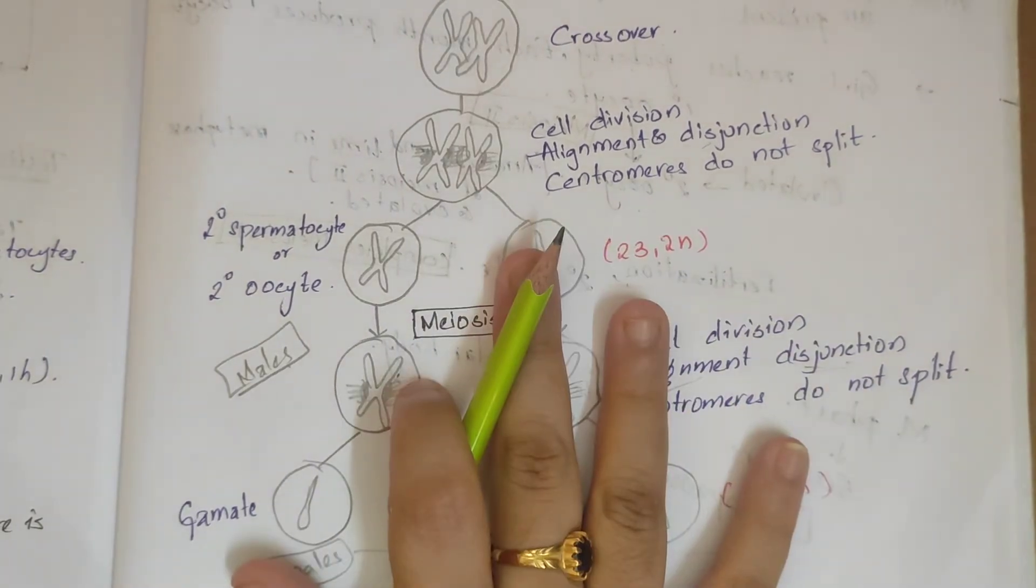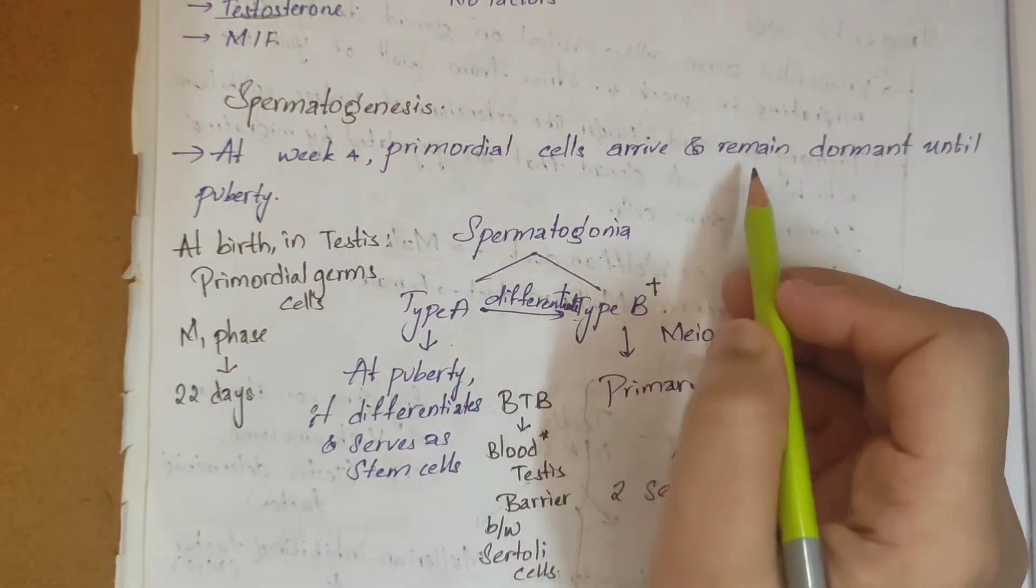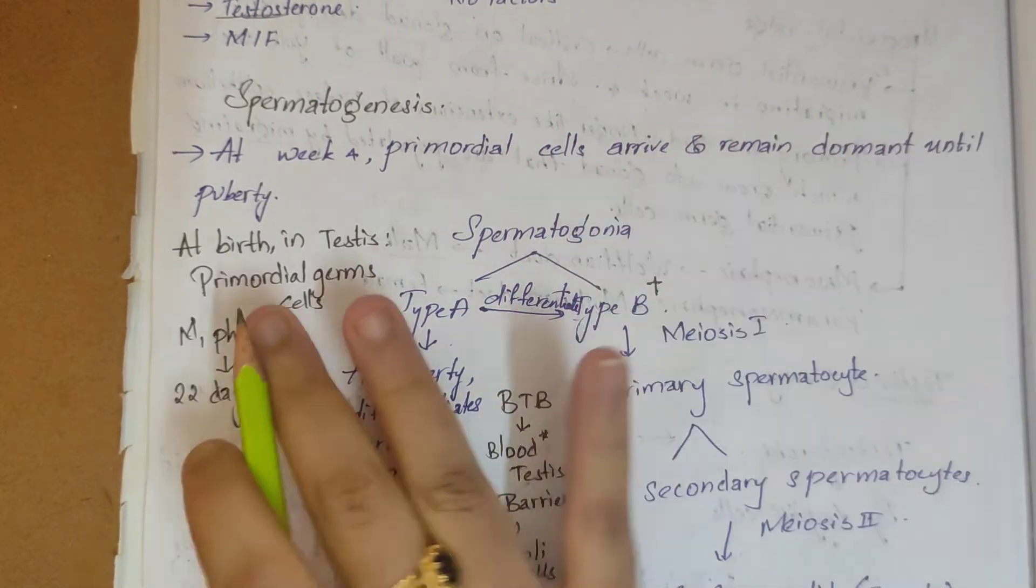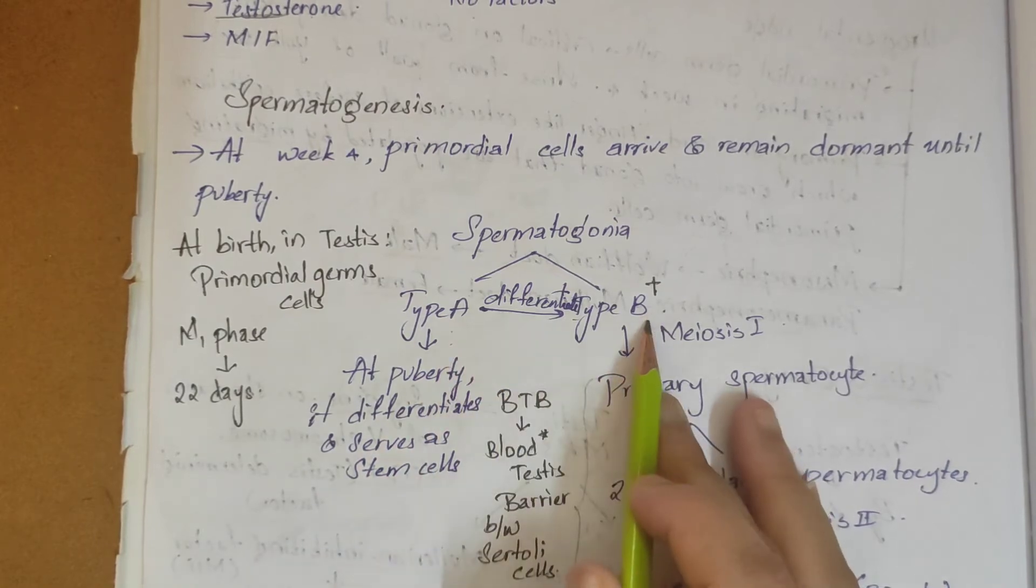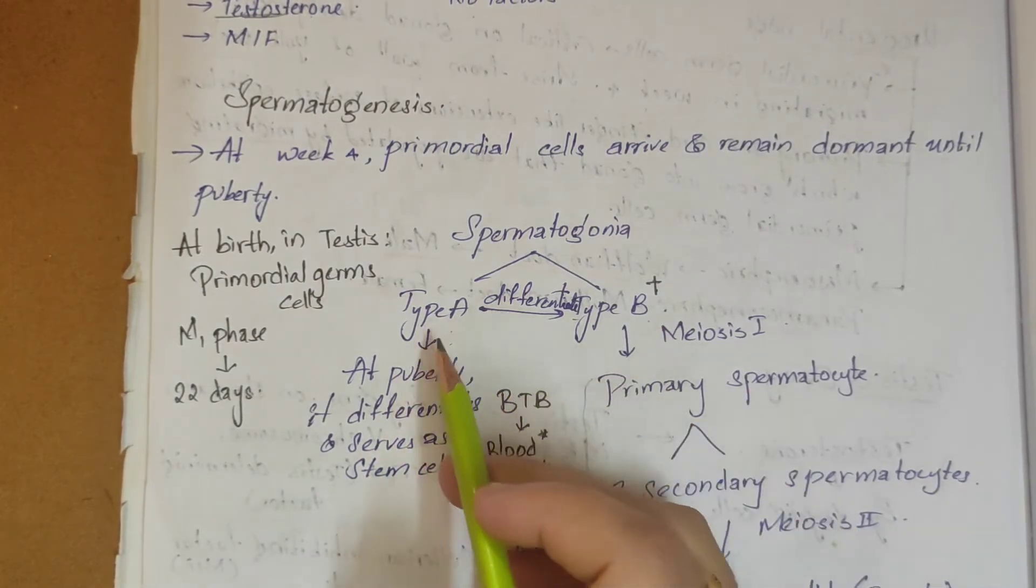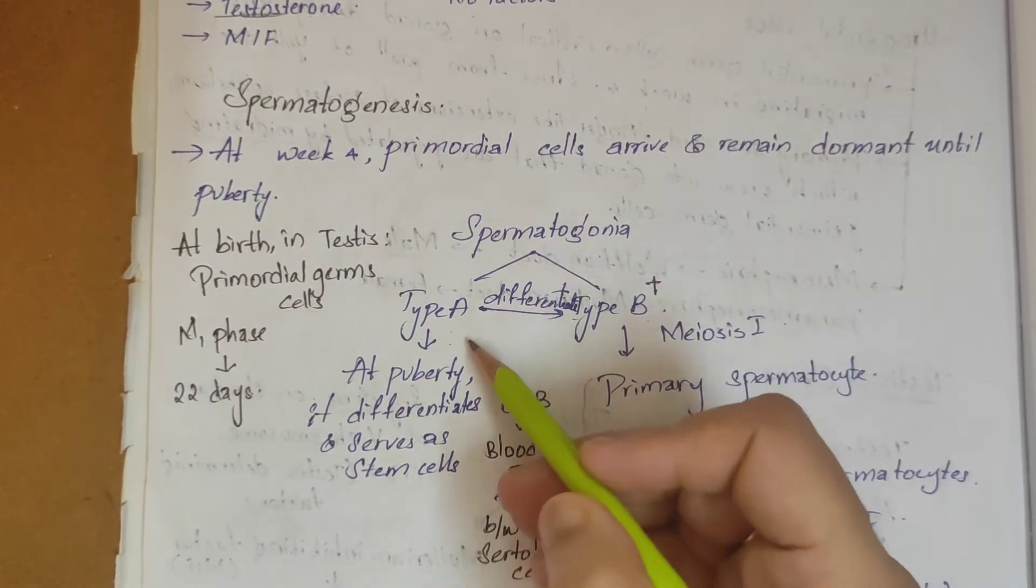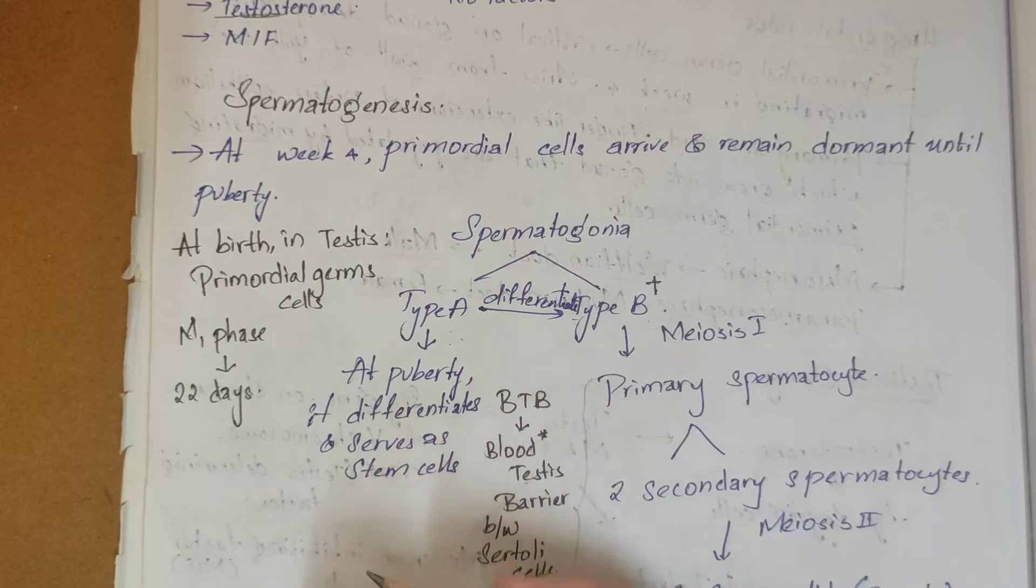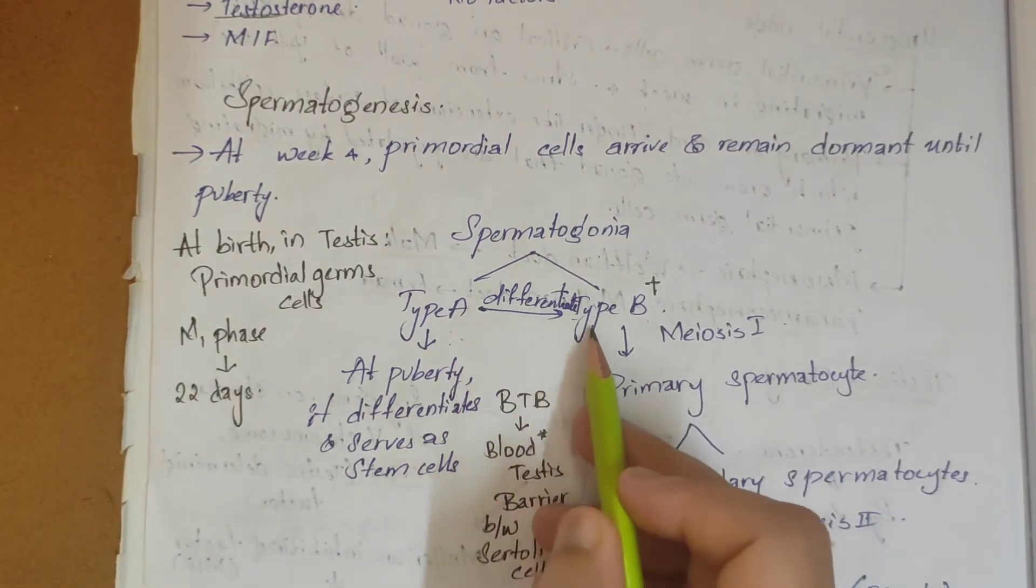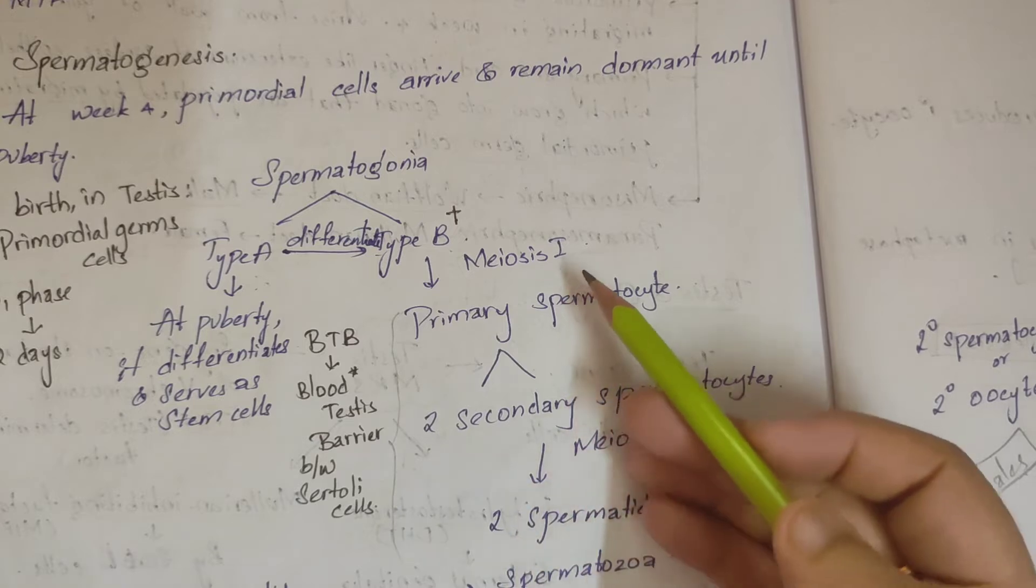Coming to spermatogenesis: at week 4, primordial cells arrive and remain dormant until puberty. Spermatogonia has two types - type A and type B. At puberty, type A differentiates and serves as stem cells. Type A does not undergo meiosis or anything.